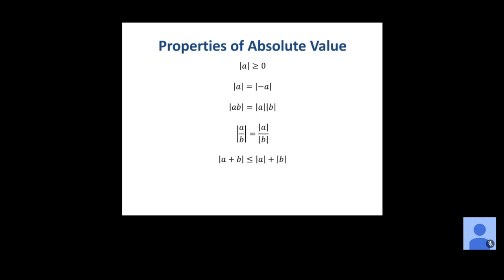Some properties of absolute values: |a| ≥ 0 always, since absolute values are never negative. |a| = |−a|, since a number and its opposite have the same distance from zero. For products: |ab| = |a| · |b|, so you can split the absolute value over multiplication. For quotients: |a/b| = |a| / |b|. The triangle inequality states that |a + b| ≤ |a| + |b| — the absolute value of a sum is always less than or equal to the sum of the individual absolute values.